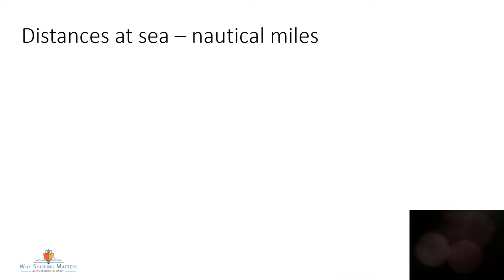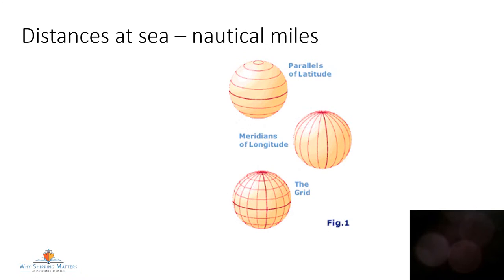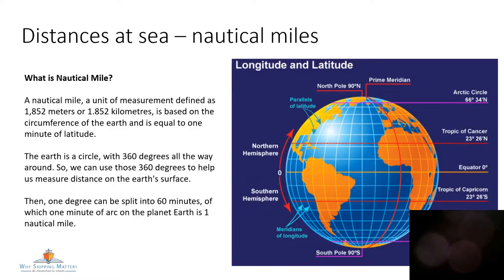Now we need to know how to measure our distance at sea. We use nautical miles. You have to understand the parallels of latitude and the meridians of longitude — those imaginary lines that form a grid around the Earth. A nautical mile is defined as 1,852 metres. What you need to remember is it's equivalent to a minute of latitude. The Earth is a circle with 360 degrees all the way around, and each of those degrees can be split into 60 minutes. Each minute on that arc of our planet Earth is one nautical mile.